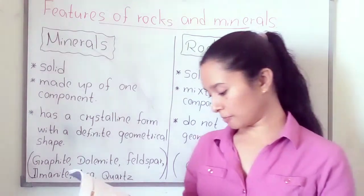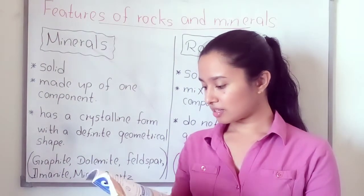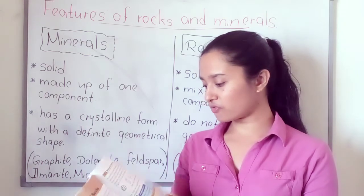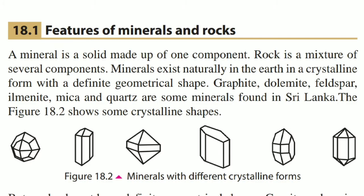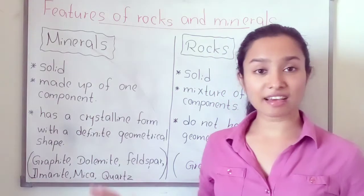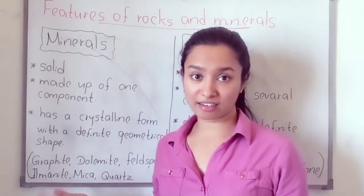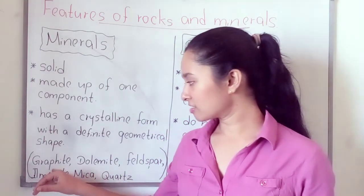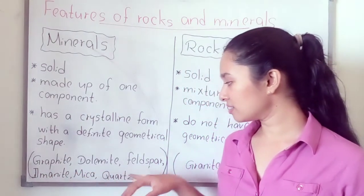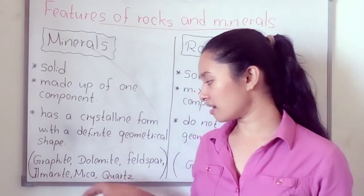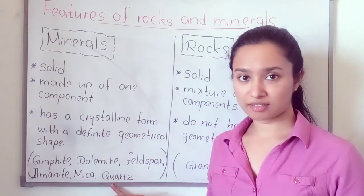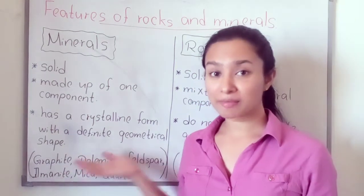Here on page number 101 you can see the crystalline forms we can observe in minerals — those are the crystalline forms with definite geometrical shapes. These are the minerals we can see in our country: graphite, dolomite, feldspar, ilmenite, mica, and quartz. These are the examples for minerals.